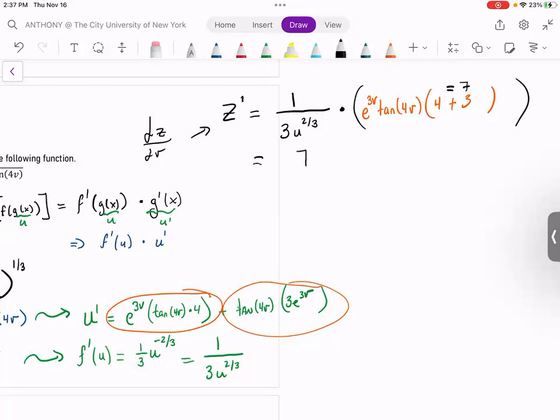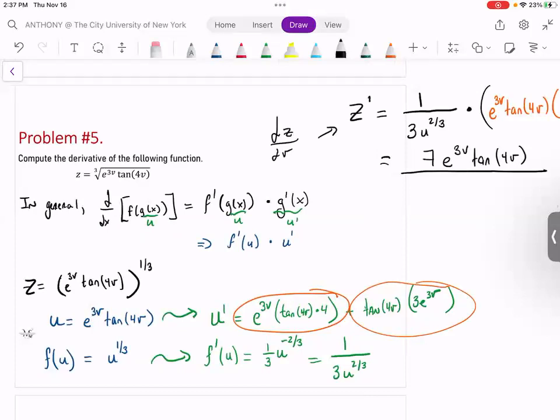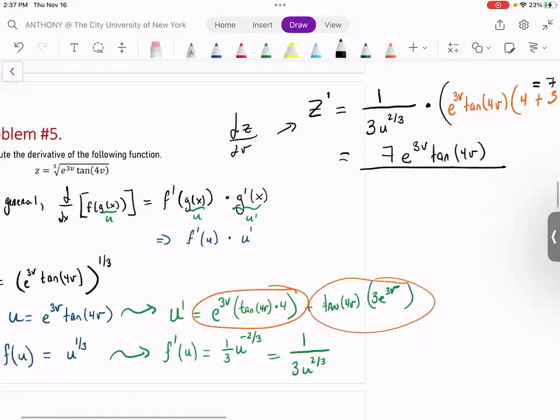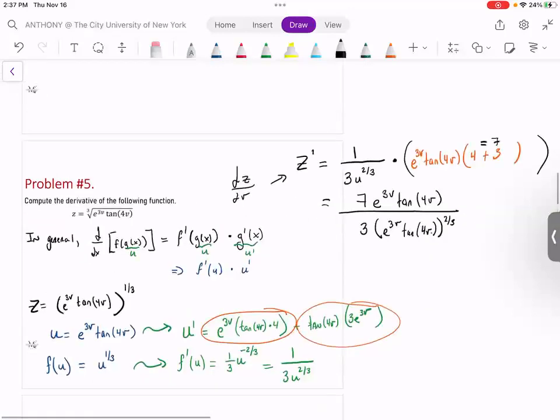So it's 7 over, sorry, 7 e to the 3v times tangent of 4v. And in your denominator, which is 3 u to the 2 thirds, because the derivative has to be in terms of v, and I said u was equal to e to the 3v tan of 4v, I'm just going to rewrite that part.